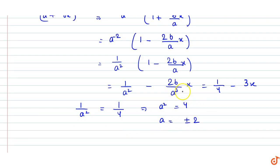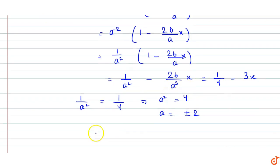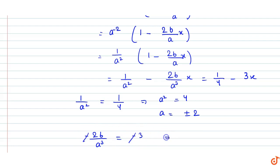Similarly, x के coefficient को compare करेंगे तो: minus 2b/a³ = minus 3. Minus से minus cancel हो जाएगा, तो 2b = 3a³.